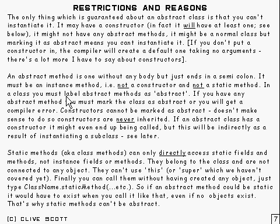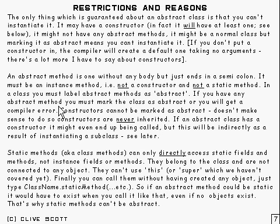In the class, you must label the abstract method as abstract. I'm stressing that because, in fact, methods in interfaces are also actually abstract, but you don't have to put it in the case of interfaces. But if you have an abstract method in a class, you've got to mark it as abstract. And if you've got any abstract method at all in the class, you've got to mark the class itself as abstract. Just a single abstract method means you must mark the class as abstract. You can mark it as abstract without any abstract methods at all, as well. But if you've got a single abstract method in the class, you've got to mark the whole class as abstract — and if you don't, you'll get a compiler error.